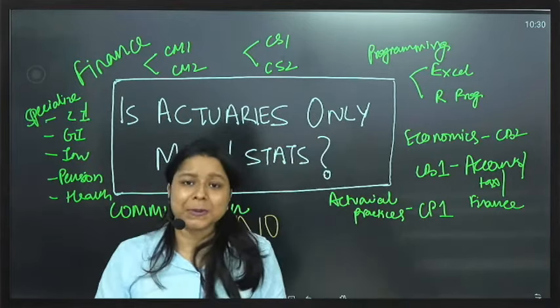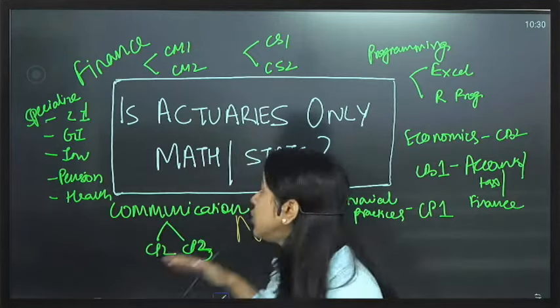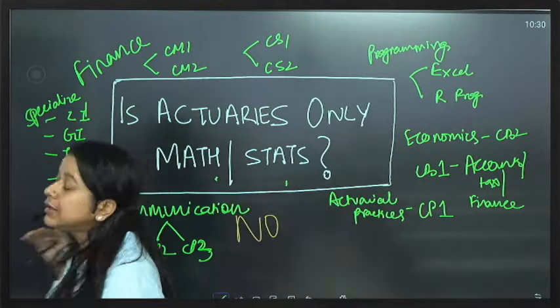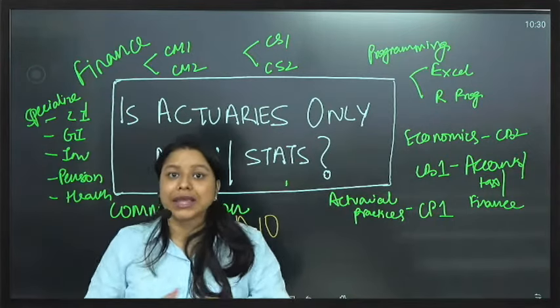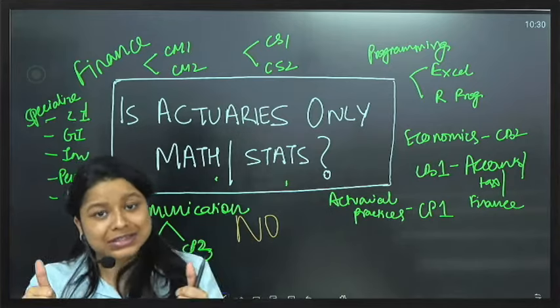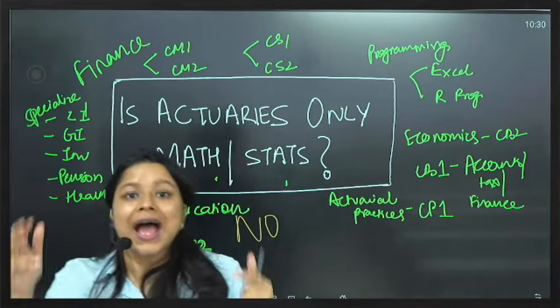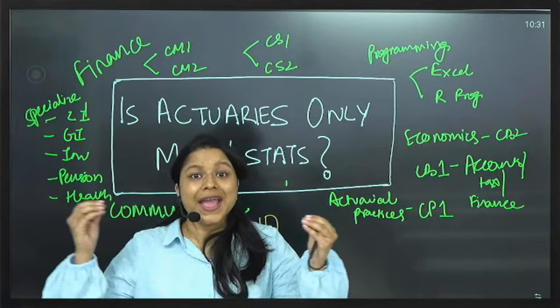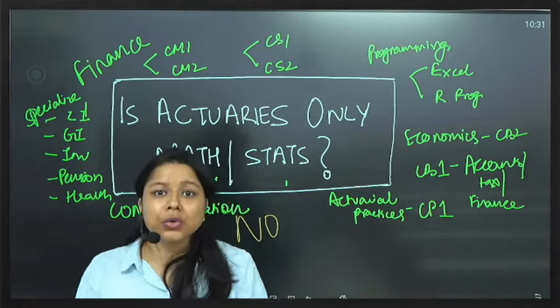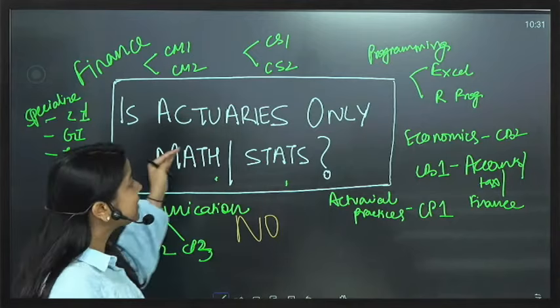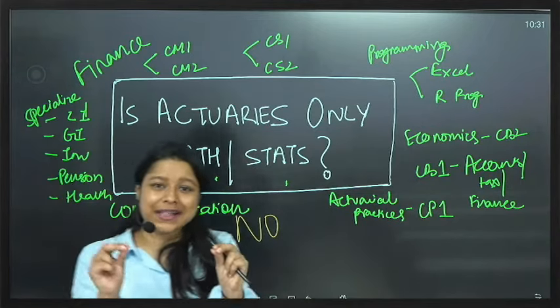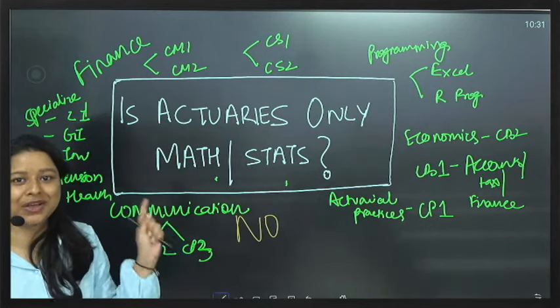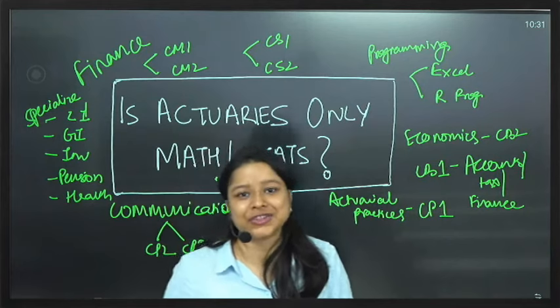So it's not maths, it's not stats. It's much more than that that you're going to learn in your entire actuarial science journey, which consists of your 13 papers and 3 years of work experience so that you can become a fellow actuary. So next time anyone asks you this question - is actuarial science only maths and stats - just tell them a very simple word: NO. It's much more than that that you are doing being an actuarial science student.